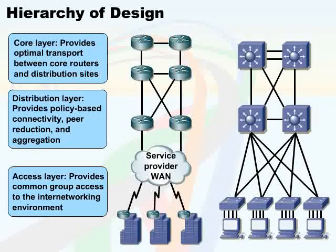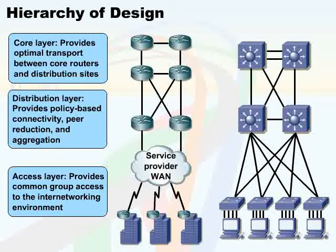There's also the third layer, which is the access layer. The access layer is going to provide the common workgroup access to everyone in the network environment, whether that means going across a service provider WAN to get to branch offices, or connecting to LAN switches and allowing user-based PCs to connect into a larger network.